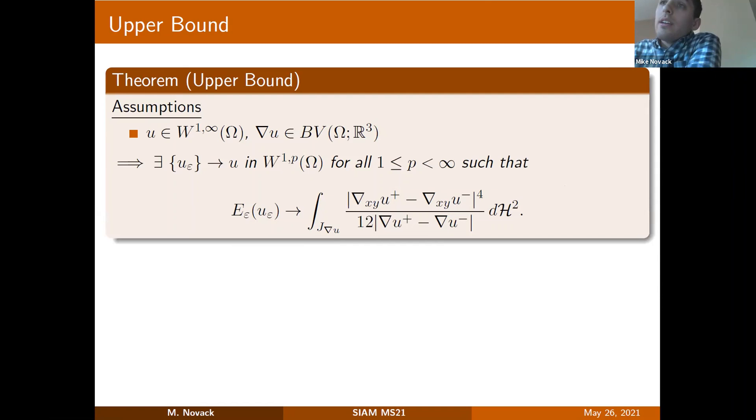The lower bound states that if I have convergence at the level of gradients in these two topologies, and if I have a limiting function whose gradient is in BV and bounded, and this assumption that epsilon times the integral of the curvature goes to zero, then I have this lower bound for the energies in the asymptotic limit epsilon to zero. Here, j_sub_∇u is the jump set of the BV function ∇u. And then this energy density, which is the fourth power of the jump of the planar gradient divided by 12 times the jump in the full gradient, is integrated with respect to the two dimensional Hausdorff measure over j_sub_∇u. To match it to an upper bound, conversely, if I have a u whose gradient is in BV and L^∞, then I can construct the sequence that approximates u such that the energies of my approximating sequence approach this limiting energy. At least in the case where the limiting gradient is in BV and L^∞, we've derived matching upper and lower bounds.